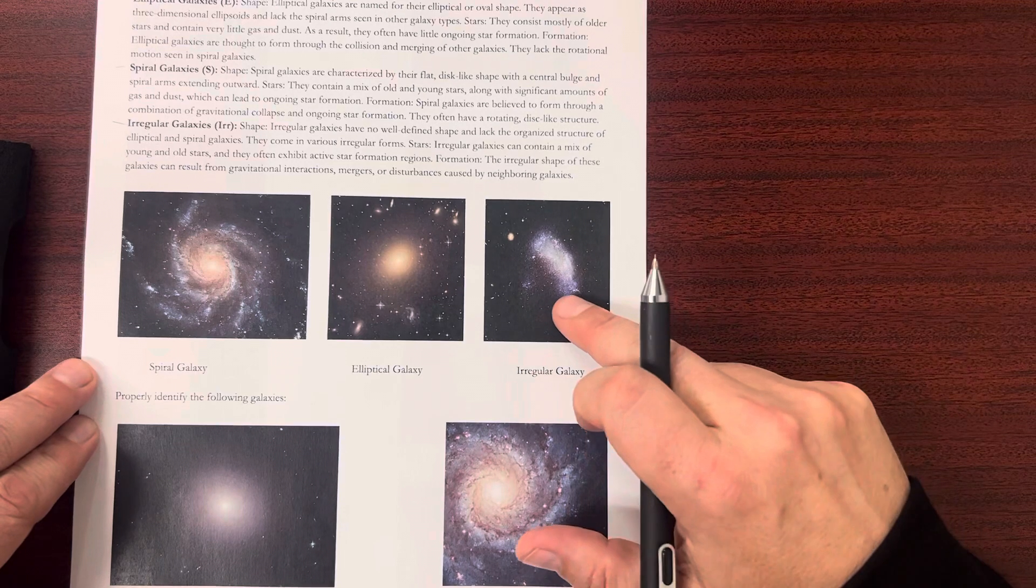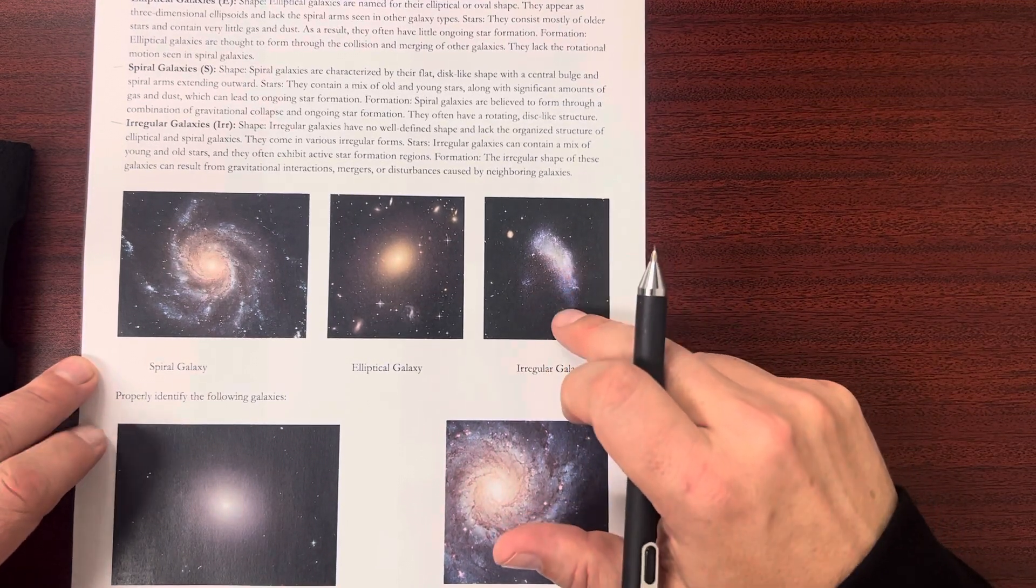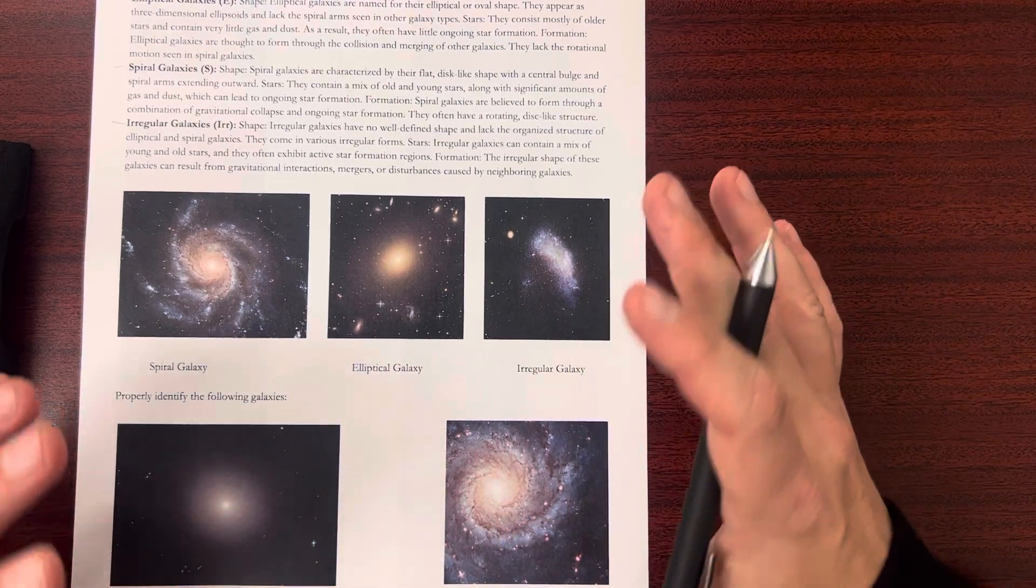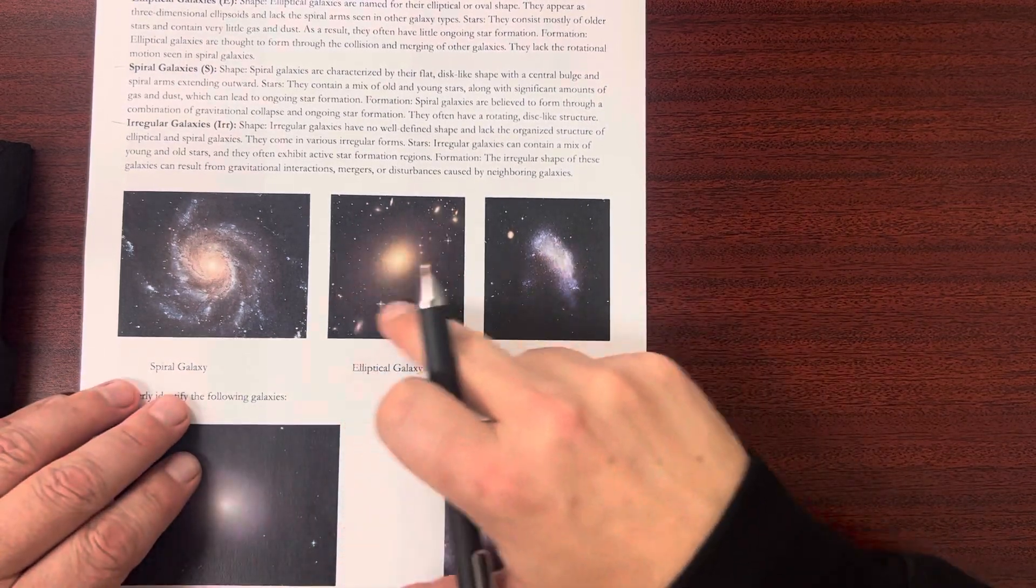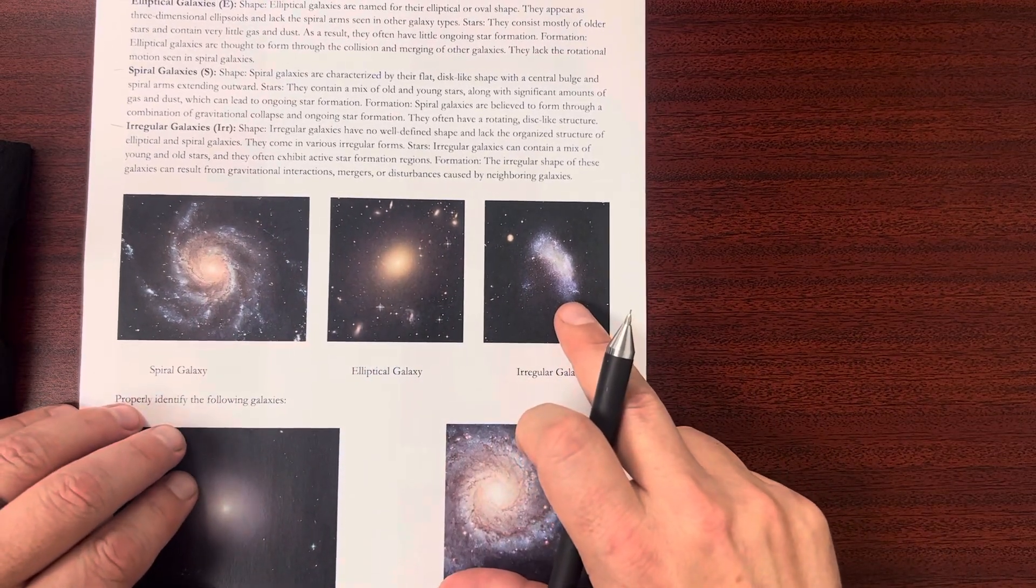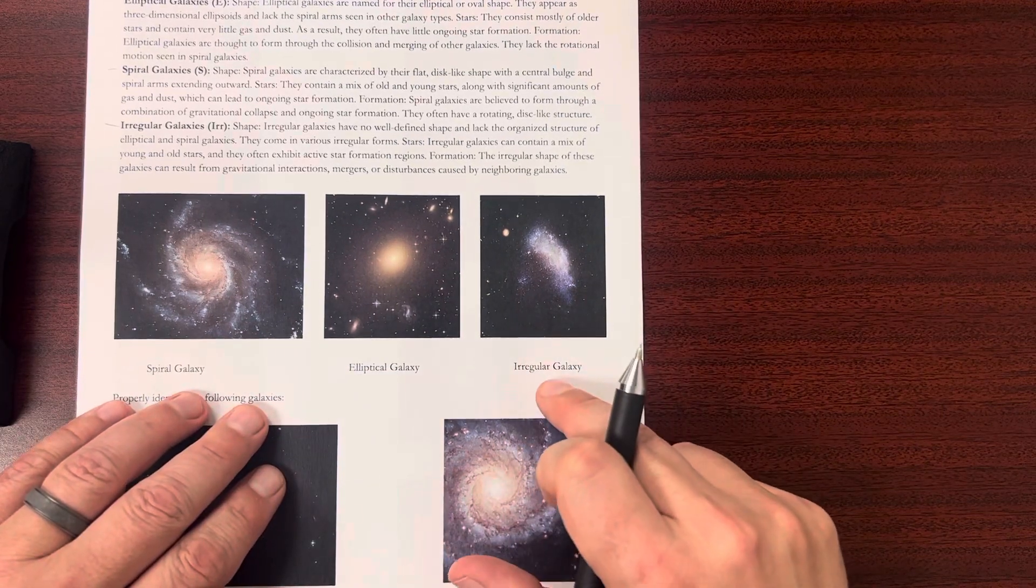And then irregular tends to generally be like everything else. So they have no specific form. They don't have this nice spherical form. They don't have the spiral form. They're a bit of a mishmash of shapes. Those are the irregular galaxies.